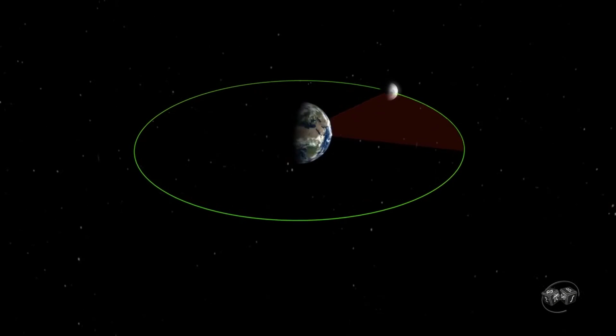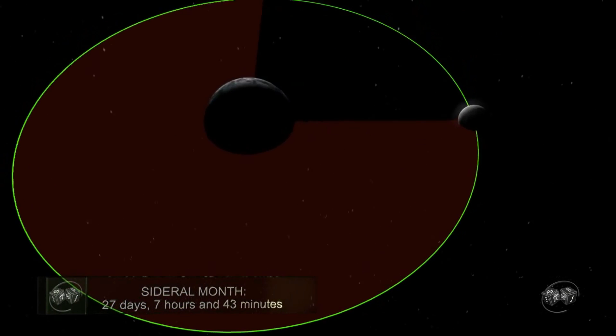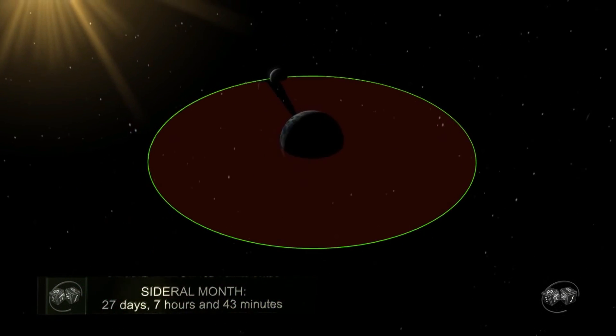The Moon takes to go 360 degrees around its orbit 27 days, 7 hours and 43 minutes. This cycle is called the sidereal month.